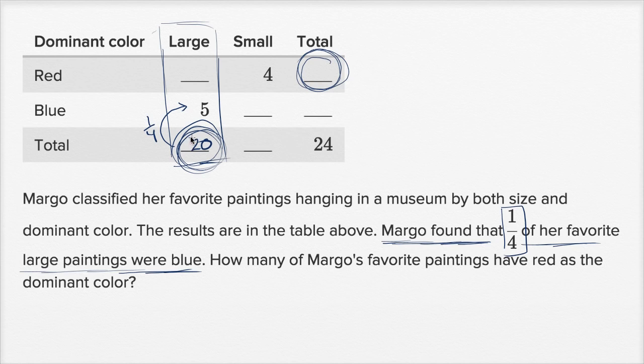And if we know that, then we could start to fill in some of these other blanks. So if we have a total of 20 large paintings and five are blue, then 15 are going to have to be red, because the red large ones plus the blue large ones is going to add up to 20.